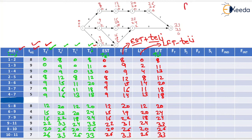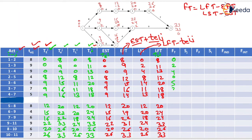Now we find the total float, which equals either LFT minus EFT or LST minus EST — both give the same answer. The total float values are: 0, 2, 4, 0, 5, 2, 4, 0, 5, 2, 2, 0, and 0.